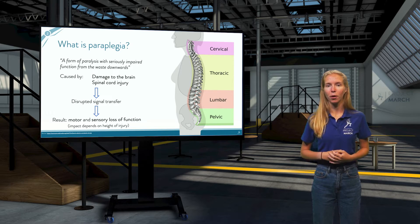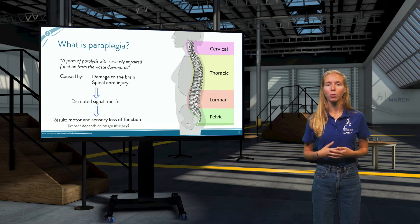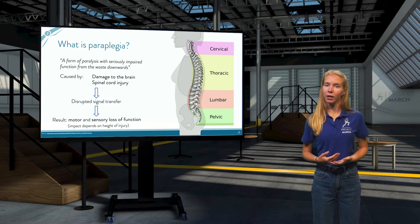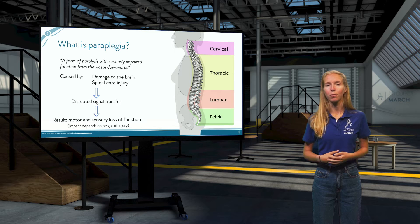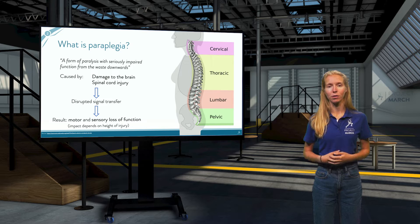This means that paraplegics not only struggle with the loss of movement below the waist, but also with serious impairments of sensory sensations. Depending on the height of the injury, the arms or even the breathing muscles may also be paralyzed. This can have a huge impact on someone's daily life functioning.